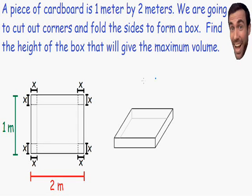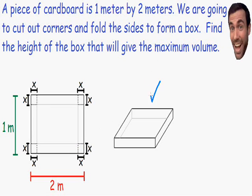Just to give you an idea of what we are talking about, I drew some pictures here on the left. Here is a flat piece of cardboard that is 1 meter by 2 meters. In this cardboard we're cutting out squares, and each of these squares has a side with a length of x. After we cut out the corners we fold the sides to form a box, which looks like the picture on the right.